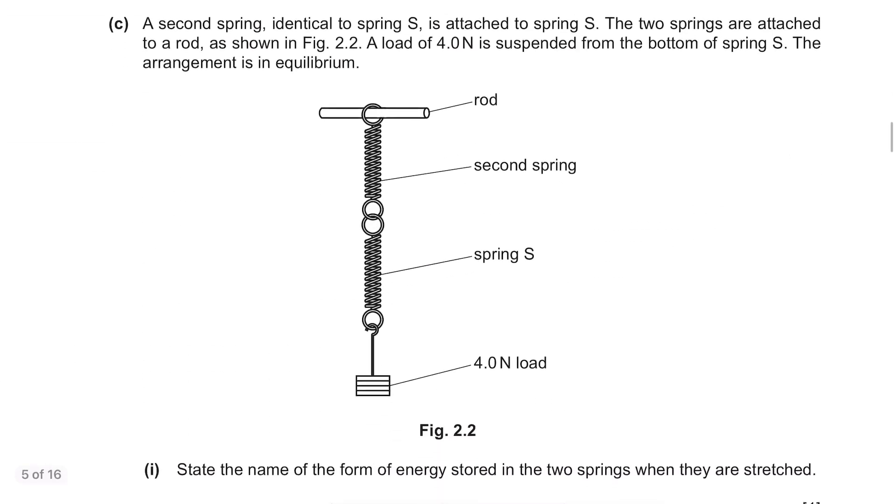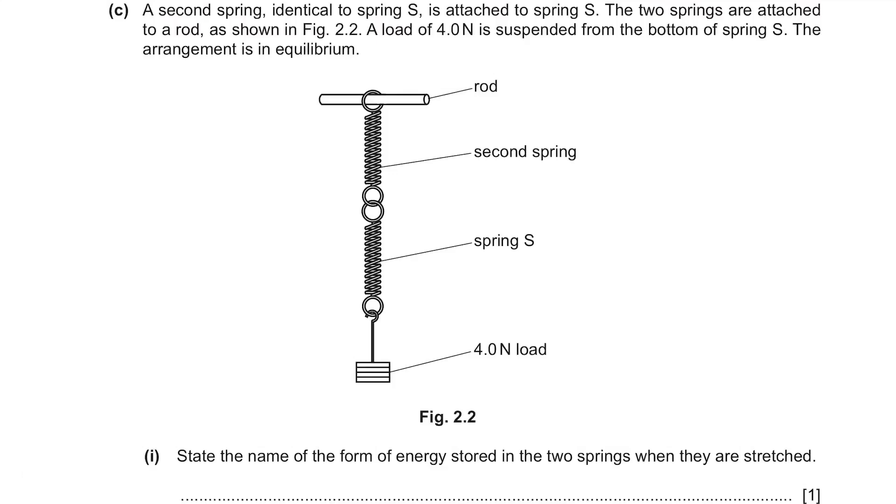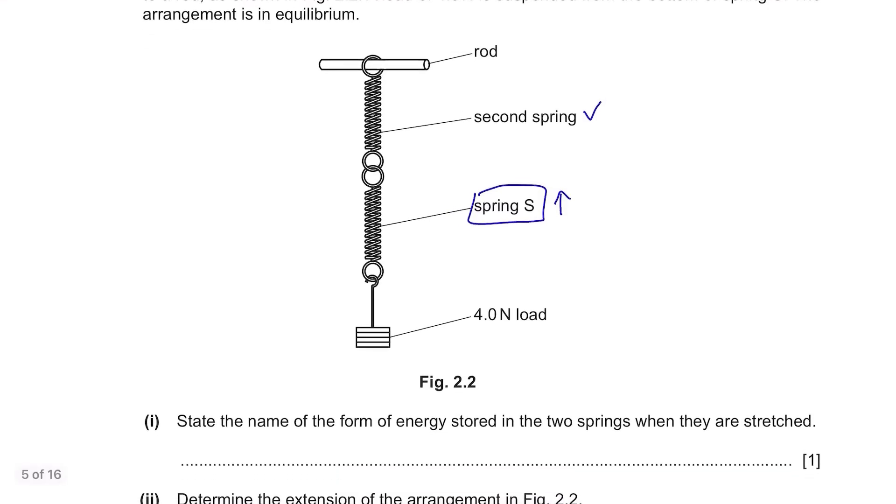Part C. A second spring identical to spring S is attached to spring S. We have been talking about this spring in the questions above and now a new spring is attached. The two springs are attached to a rod as shown in Figure 2.2. A load of 4.0 N is suspended from the bottom of spring S. The arrangement is in equilibrium. State the name of the form of energy stored in the two springs when they are stretched. The most well-known energy in springs, elastic potential energy.